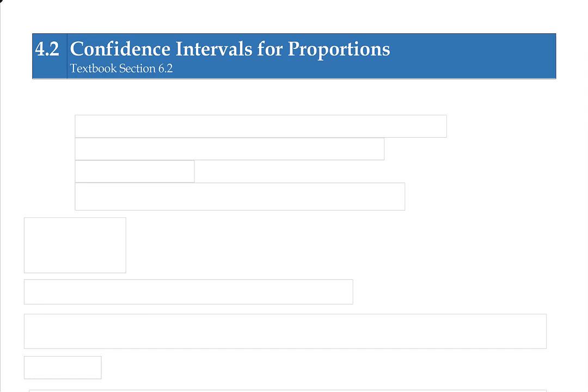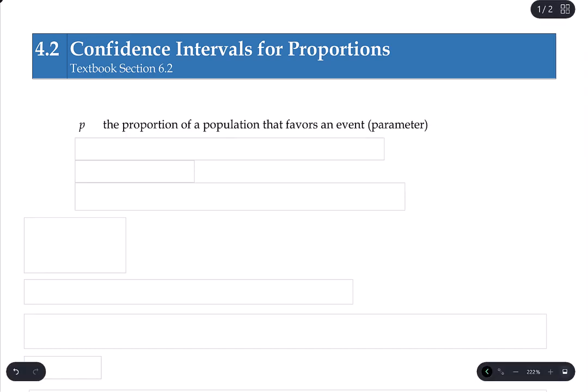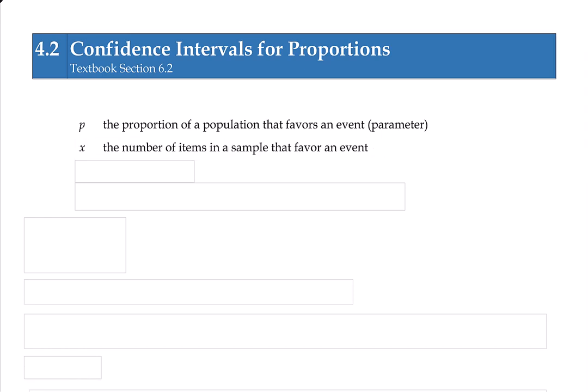Probabilities based on qualitative values often require the use of the binomial distribution, so we'll adopt much of the same notations from binomial distributions. The notations that we're interested in: p, which is the proportion of a population that favors an event, and a proportion is a percentage, so this is a population percentage. Then we need some information from our sample. x is going to represent the number of items that favor an event from within a sample. n will be the sample size.